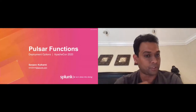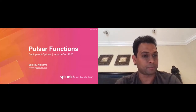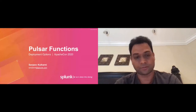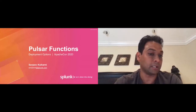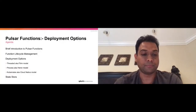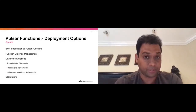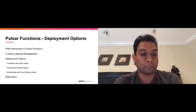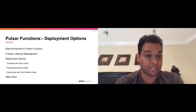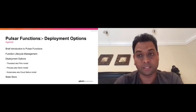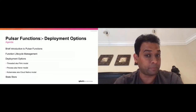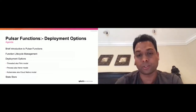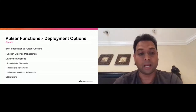Here's a brief agenda of the talk. I'll give a brief introduction of Pulsar Functions — hopefully most people already know this. We'll talk about lifecycle management, what function lifecycle actually means. Then we'll go into the meat of the talk: the various deployment options. In particular, the threaded model — I call that the Flink model — then the process model, which I call the Heron model, and then the cloud-native Kubernetes model. If time permits, I'll touch on the state store that Pulsar Functions has.